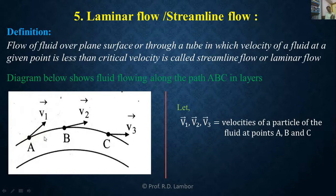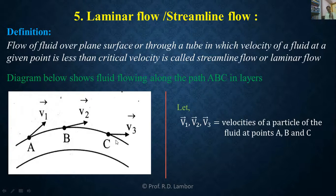In case of streamline flow, each new particle is following the path of its preceding particle. The first newly arrived particle follows the path, then the second, then the third. The same path ABC will be followed by all particles arriving at that point.